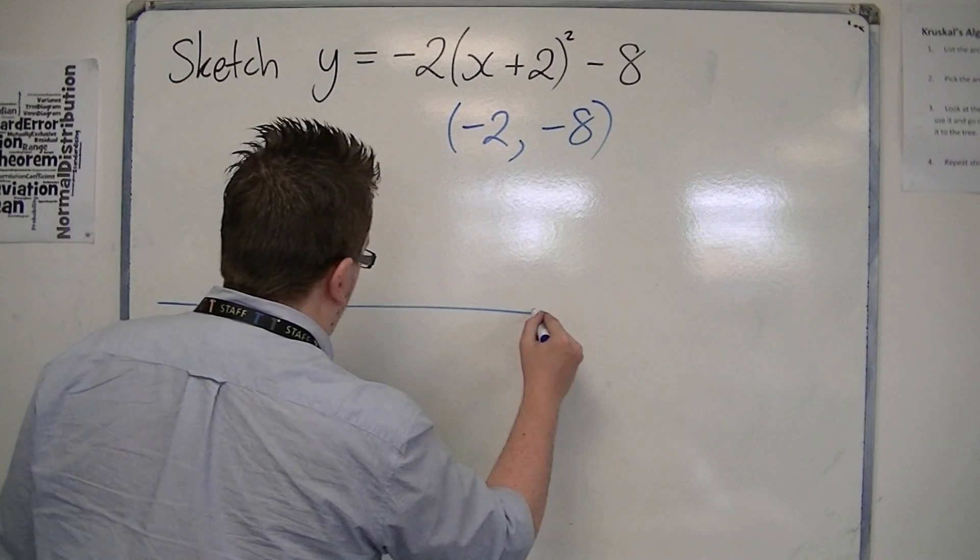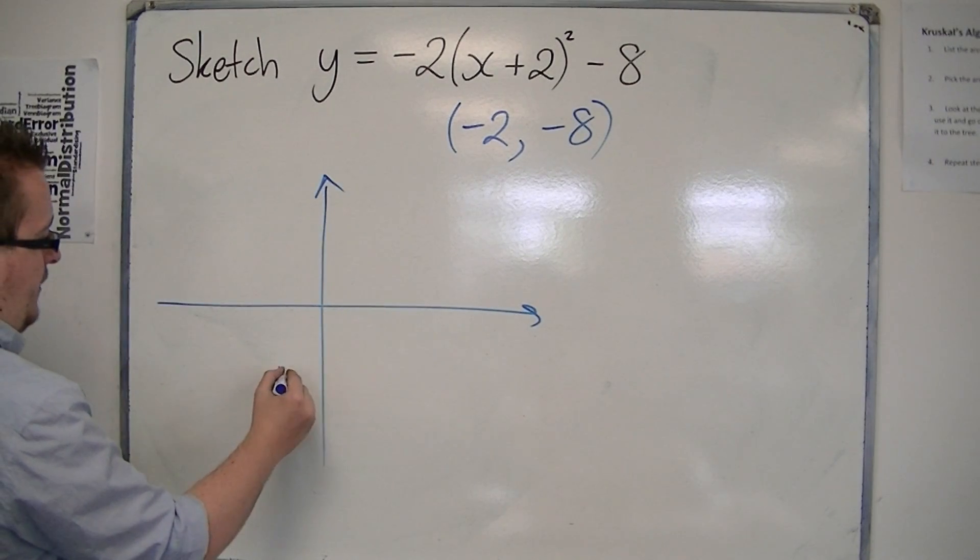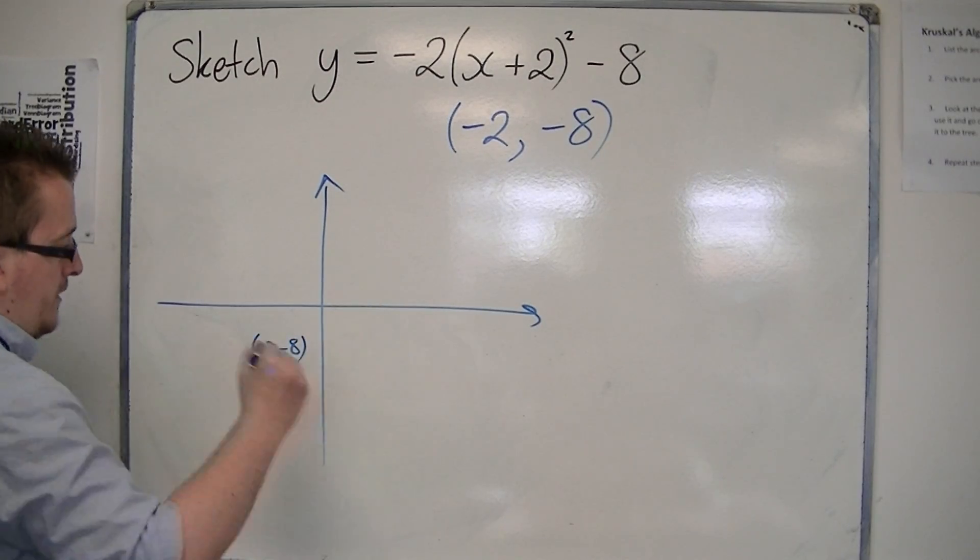So if I get some axes up, we're going to have minus 2, minus 8, let's say something down here, like that.